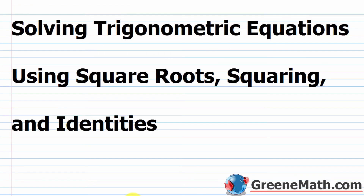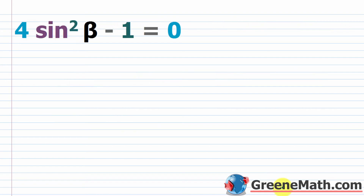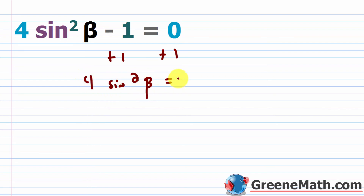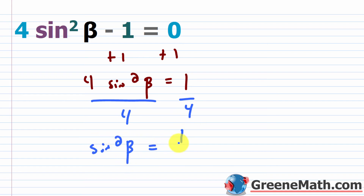In this lesson, we want to talk about solving trigonometric equations using square roots, squaring, and identities. Let's start with 4 times sine squared beta minus 1 equals 0. Add 1 to both sides: 4 sine squared beta equals 1. Divide both sides by 4: sine squared beta equals 1/4.